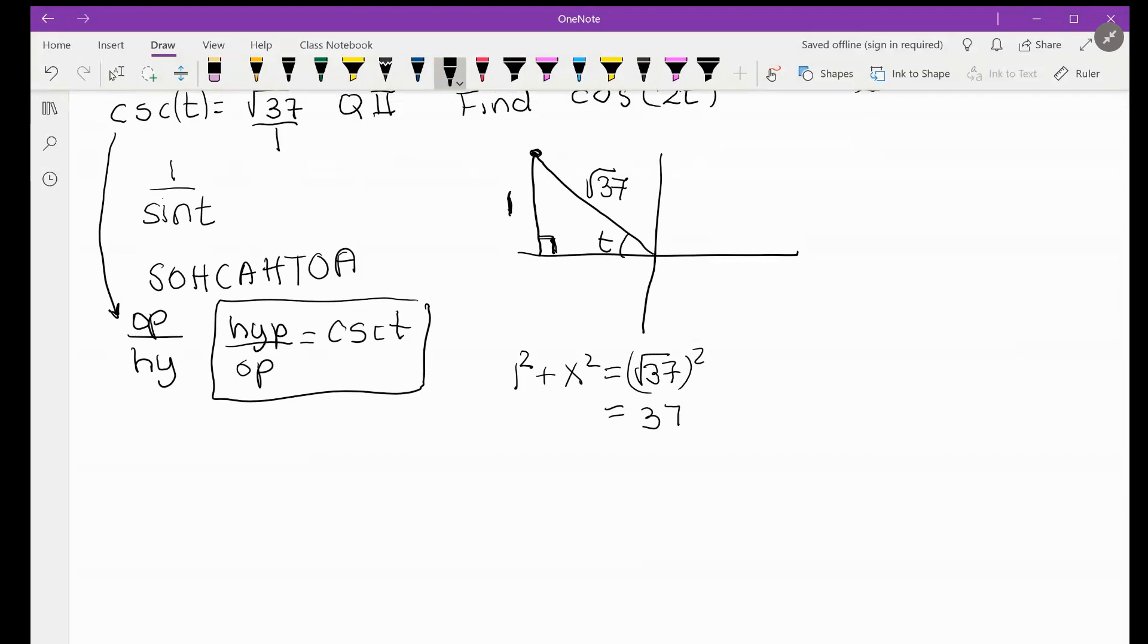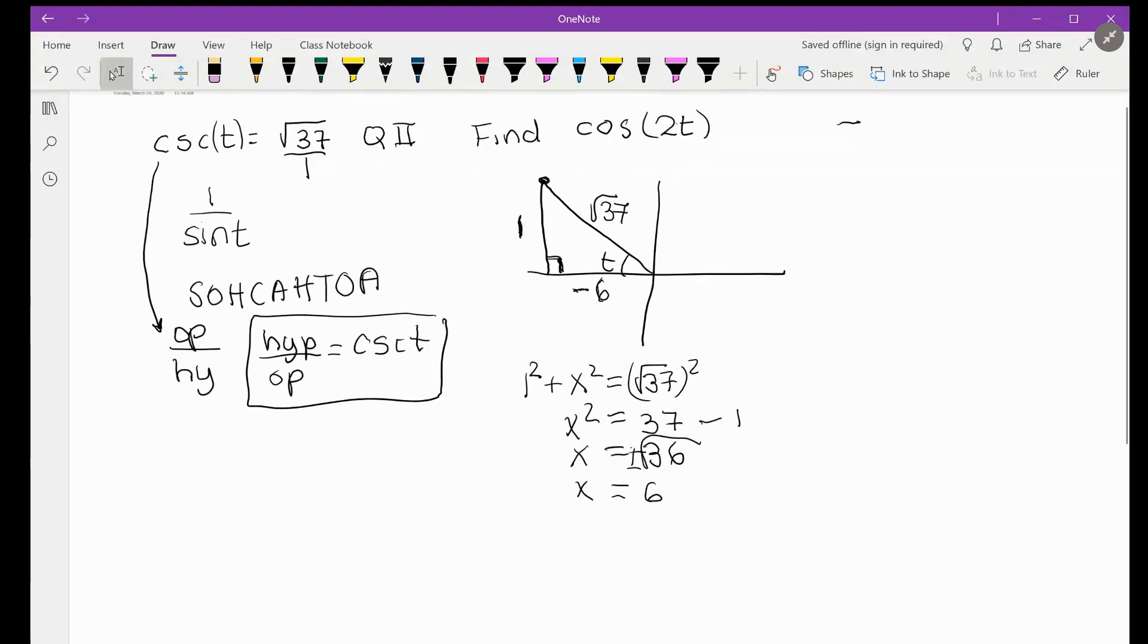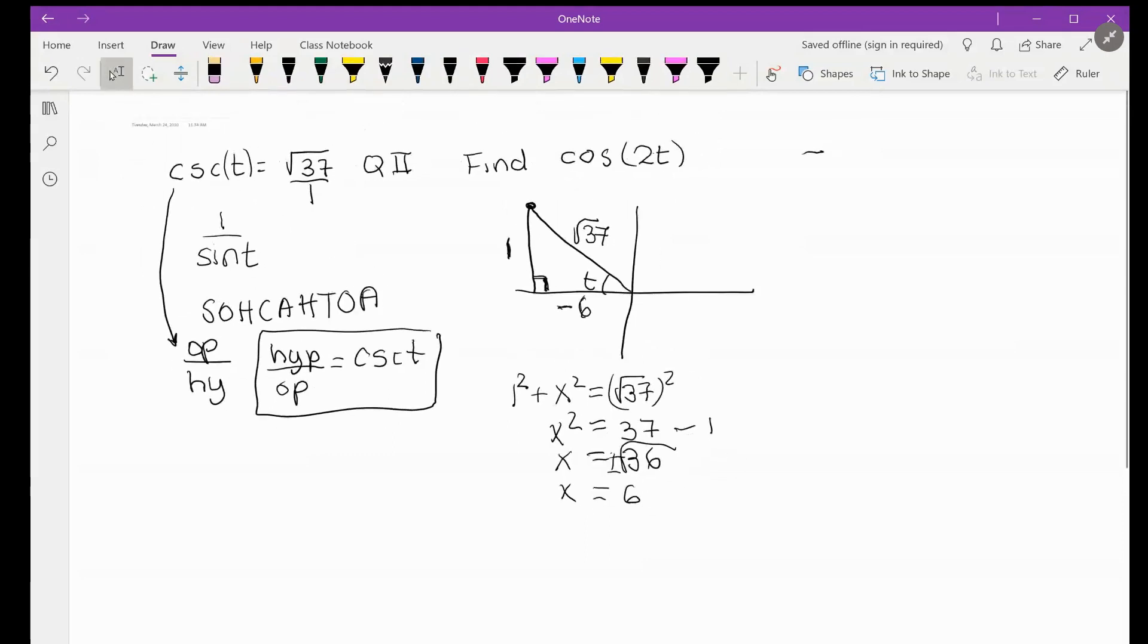So then we subtract one and we get x squared equals 36. Therefore x is either positive or negative 6. Therefore, because we're in the second quadrant, we are going to make sure that we make it a negative 6, because in the second quadrant x is negative.